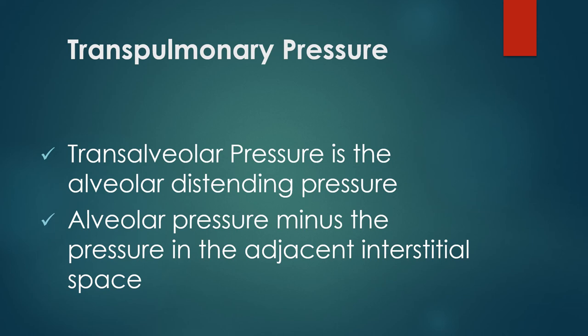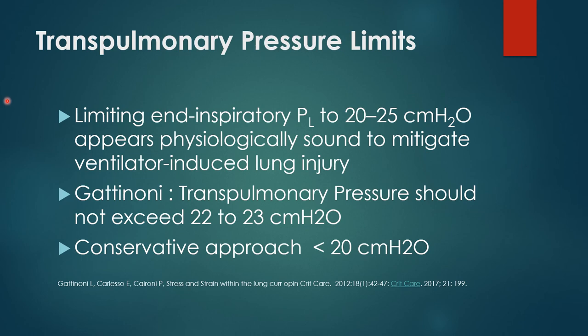The peak inspiratory pressure is measured outside the patient. Mean airway pressure and PEEP cause problems mostly with cardiac output. The pressure that causes over-distention of the lung is the transpulmonary pressure, also known as the alveolar distending pressure. It has been suggested we limit transpulmonary pressure to about 20 to 25 centimeters of water. Dr. Gattinoni recommends it should not exceed 22 to 23 cm H₂O, while more conservative recommendations suggest keeping it less than 20 cm H₂O for lung protection.